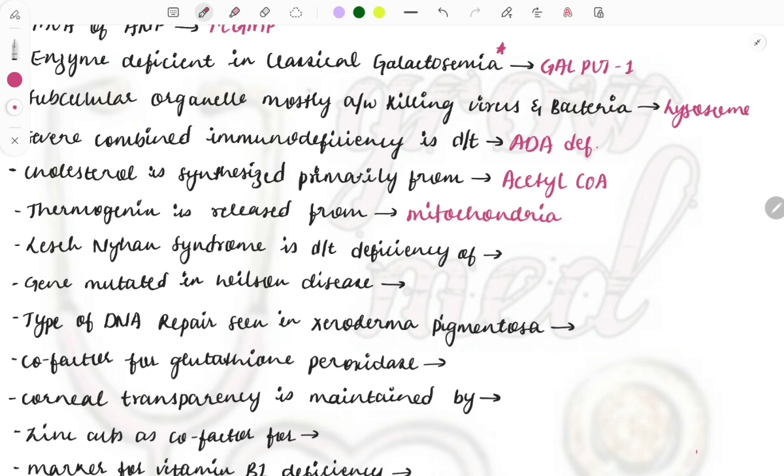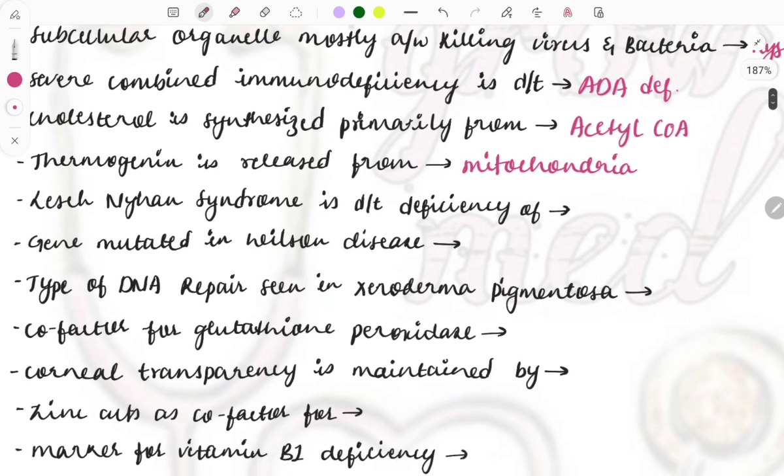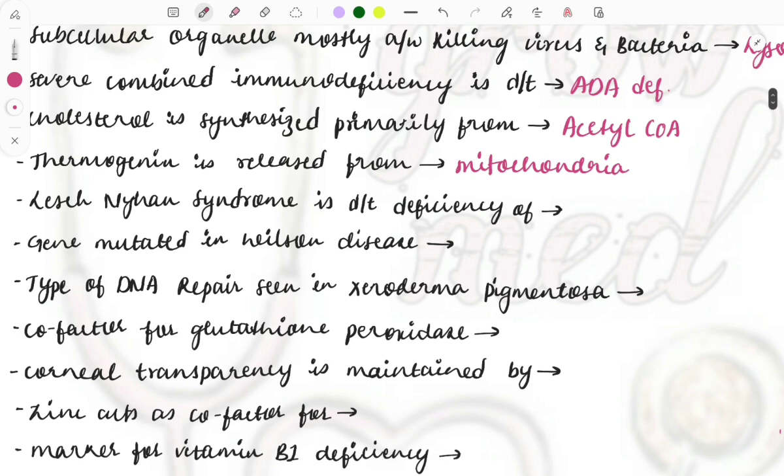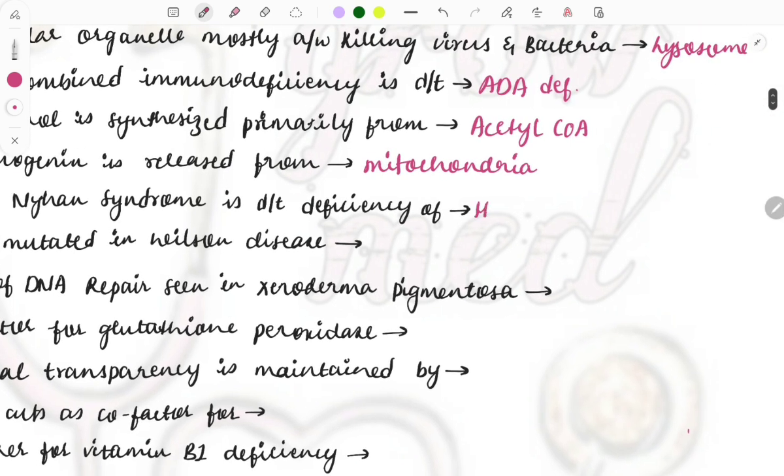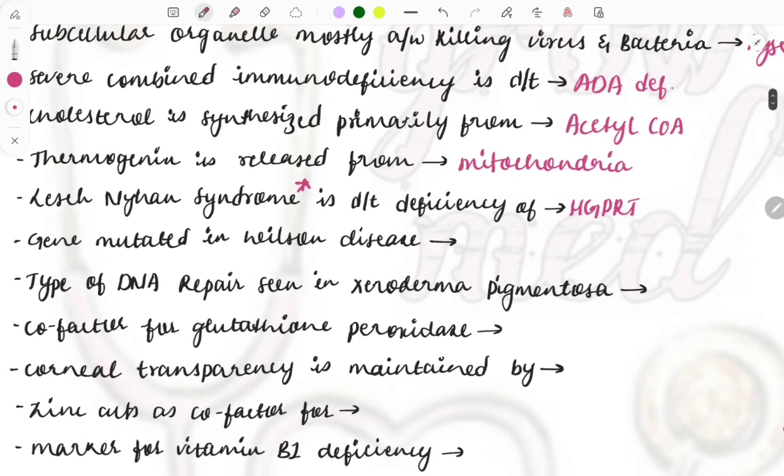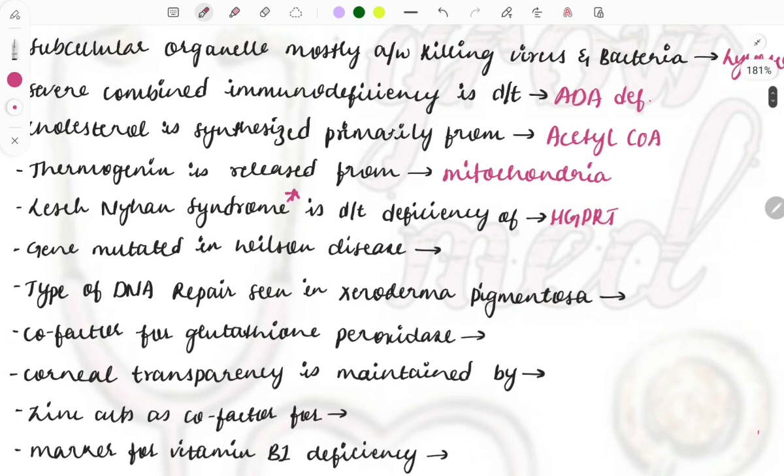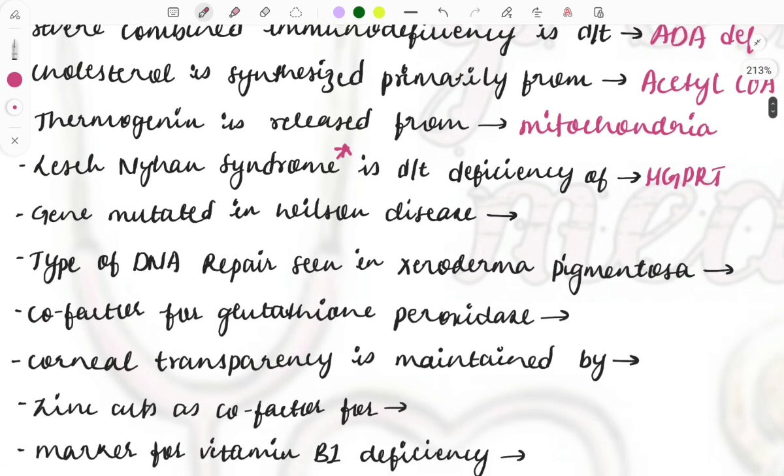Lesch-Nyhan syndrome occurs due to the deficiency of which enzyme? It is the HGPRT. Again note down that this is also an important topic. Questions are asked on the enzyme deficient and the clinical features like the self-mutilating behavior. It is X-linked recessive and males are most commonly affected with this Lesch-Nyhan syndrome, disease of purine metabolism. Uric acid will be increased and will be causing this feature. A must-do topic.